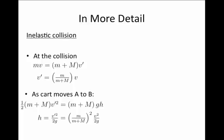We have the ratio of m, the bullet mass over the sum of the masses squared times v squared over 2g.